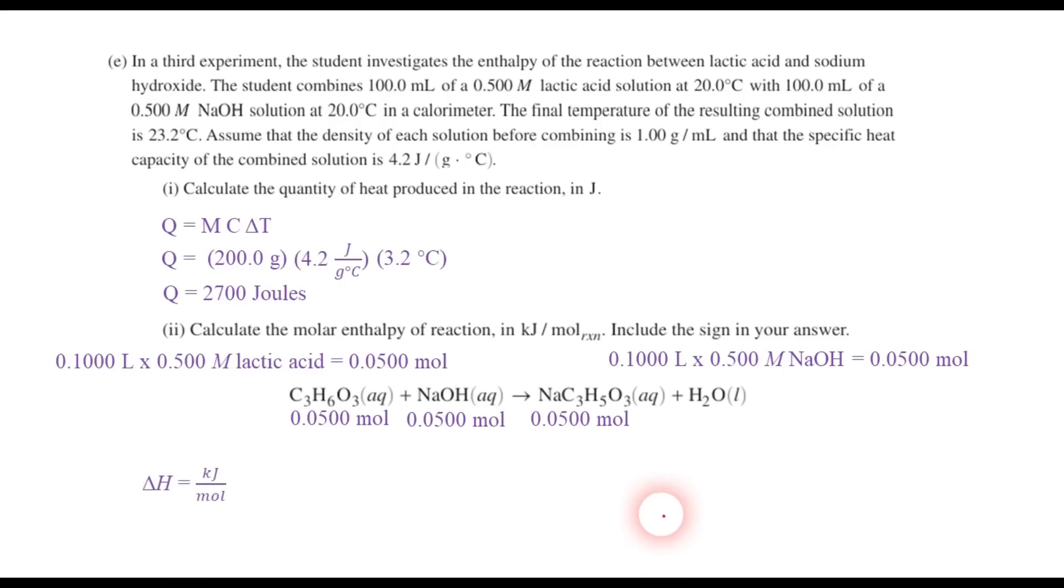So in our delta H, that's going to be in kilojoules per mole. So 2,700 joules is 2.7 kilojoules. And we want to remember that this is an exothermic process because the temperature is going up. And so we need to change the sign on this to make it negative 2.7 kilojoules. And the number of moles we just calculated was 0.0500. And when you divide that out, you find that the delta H is negative 54 kilojoules per mole. So that's the answer to E part 2.